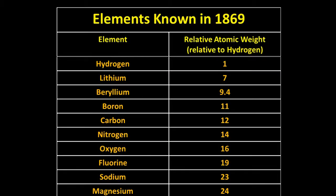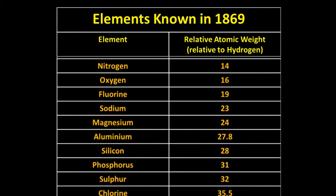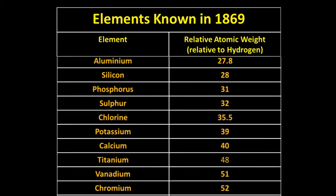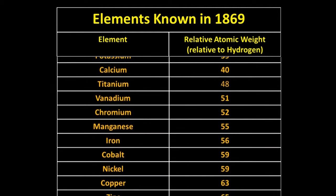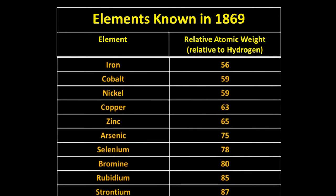Now you could just list the elements in order from lightest to heaviest, but then any trends would not be clear. Remember, no one knew how heavy atoms were, they only knew how heavy they were compared to each other. Hydrogen, being the lightest of all atoms, was given a weight of 1.